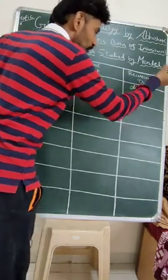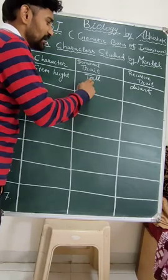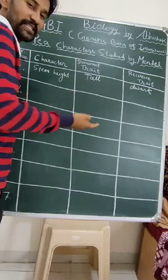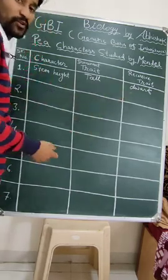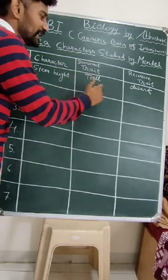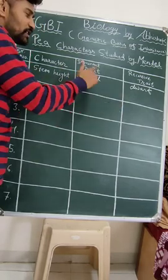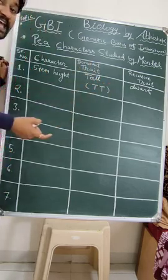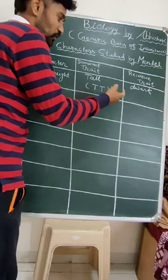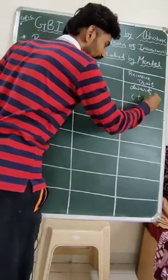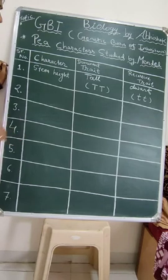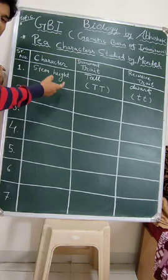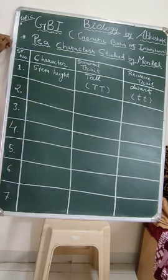Tall is dominant and dwarf is recessive. We can determine this by taking simple crosses or reciprocal crosses — Mendel actually got the same result in the upper generation where tall appears. Because of that, genotype is written in capital letters for dominant tall, and small letters for recessive dwarf. Stem height is written separately as the first character.